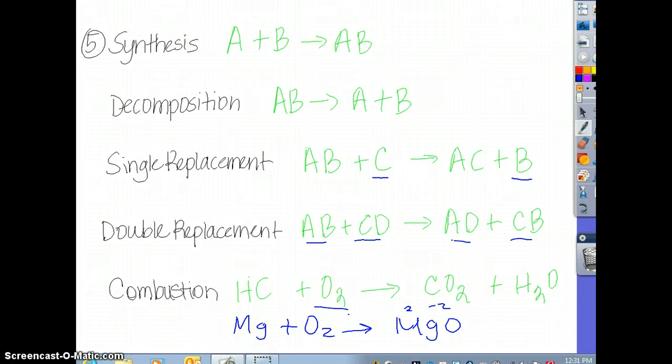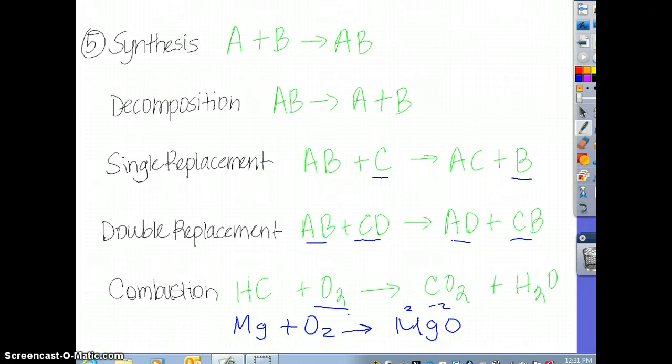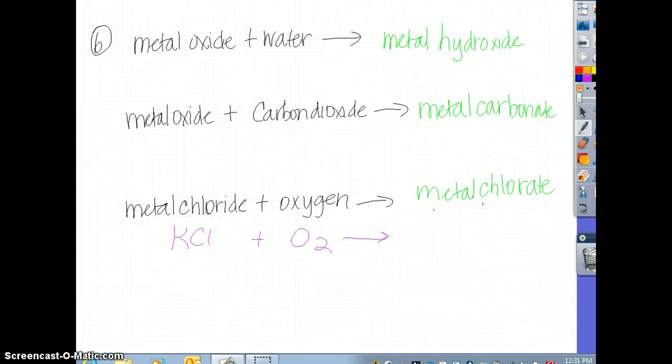Next question. So we had these equations, you needed to put them in your notebooks. You should have them on your index card. A metal oxide when placed in water gives you a metal hydroxide. A metal oxide with carbon dioxide gives you the carbonate. And then if you have a metal chloride with oxygen, you can get the metal chlorate.